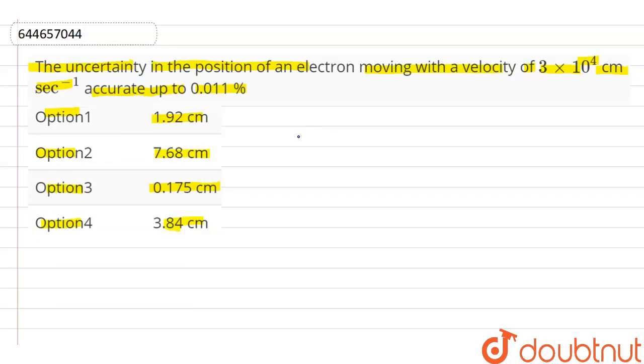Now firstly we find the uncertainty in the position of an electron moving with a velocity that is equal to 3 × 10^4 cm per second, accurate up to 0.011% / 100.